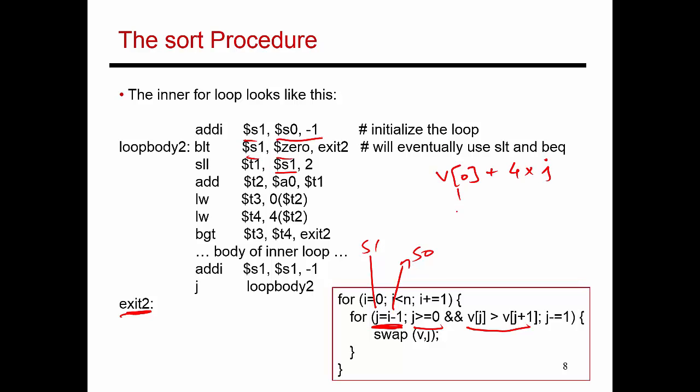Address of v0 is in a0. j is in s1. So I do 4 times s1 by shifting s1 to the left by 2. That result is placed in t1. t1 gets added to a0, and you place that in t2. So t2 now has the address of vj. I bring the value of vj into t3, and the value of vj plus 1, which is just 4 added to that address, into register t4. Then I compare t3 and t4, and if the exit condition is met, then I jump to exit 2.